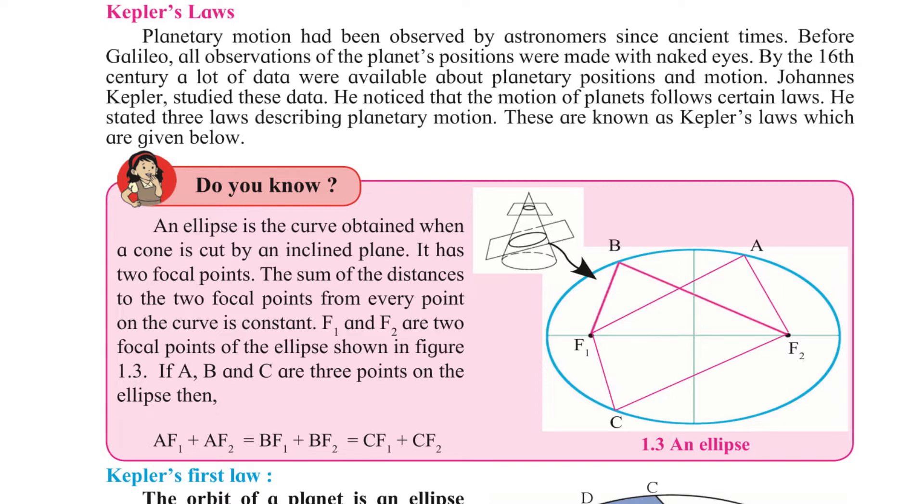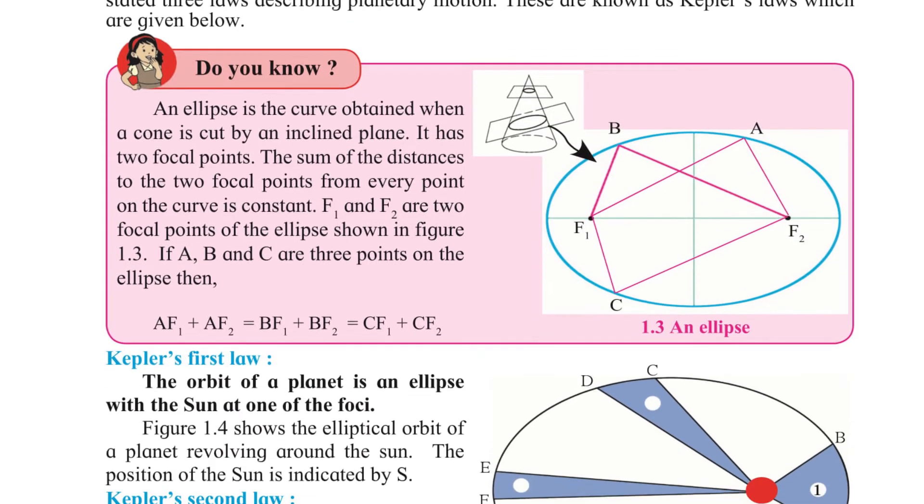The sum of the distances to the two focal points from every point on the curve is constant. F1 and F2 are two focal points of the ellipse as shown in figure 1.3. If A, B, and C are three points on the ellipse, then AF1 + AF2 = BF1 + BF2 = CF1 + CF2.